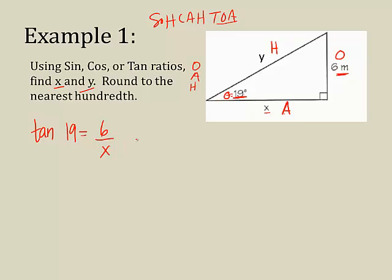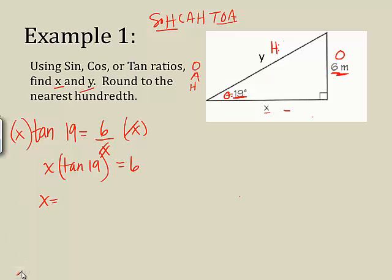So I need to solve this for x. So what I would do, multiply both sides by x. That cancels over here. So x times the tangent of 19, now that's one unit together, equals 6. So what I'm going to do is take 6 and divide it by the tangent of 19. And I get x is equal to 17.43.